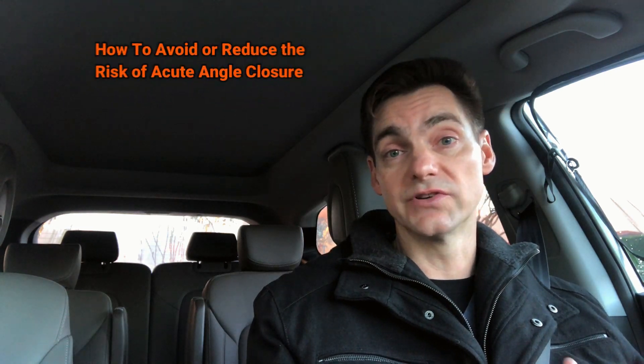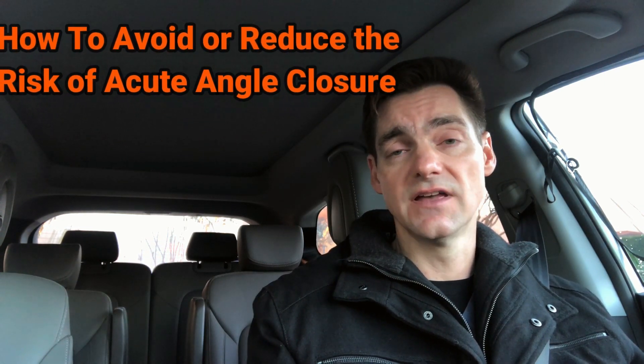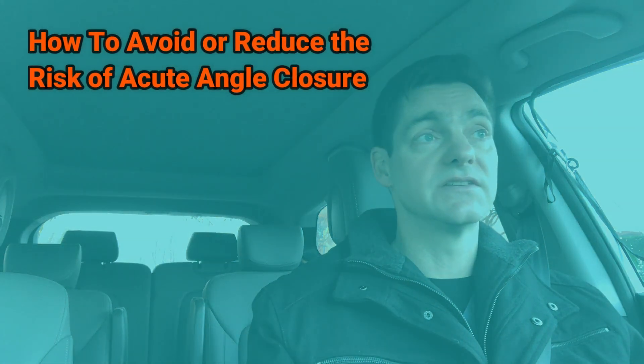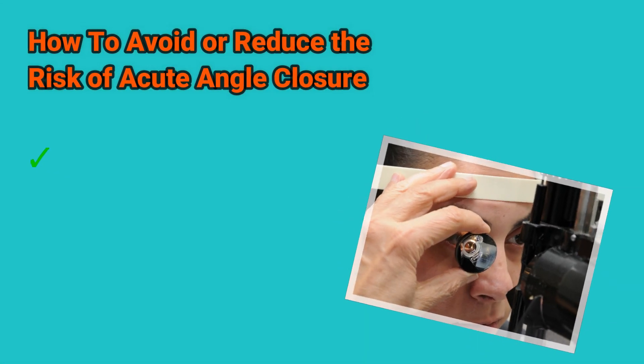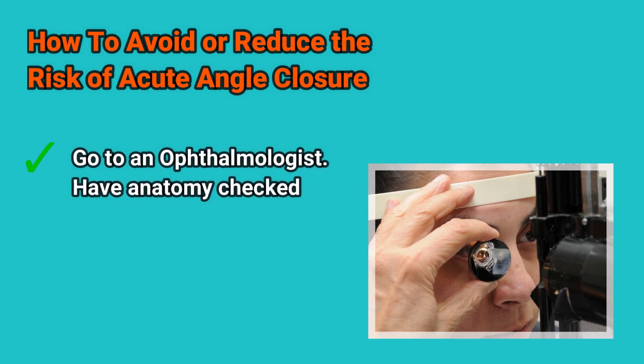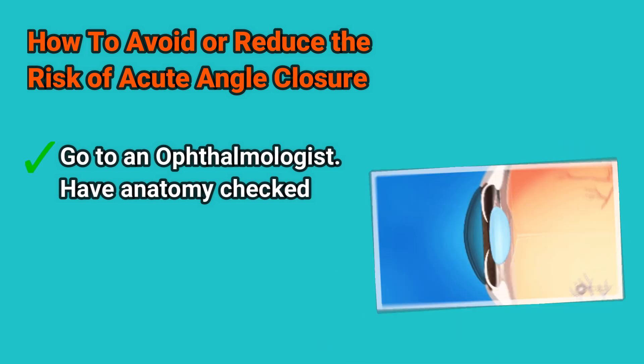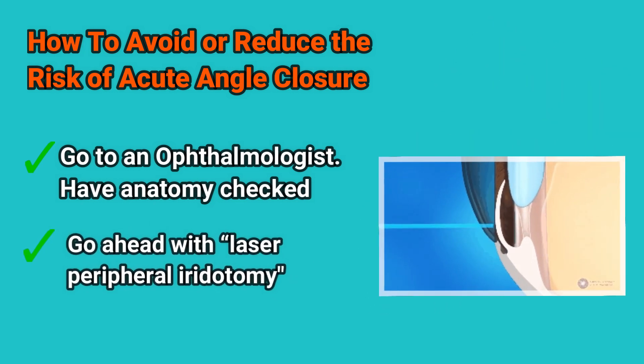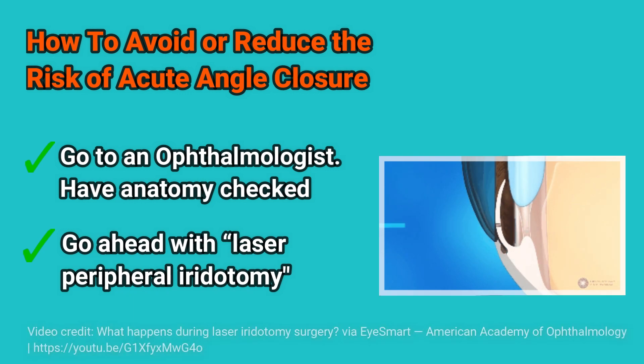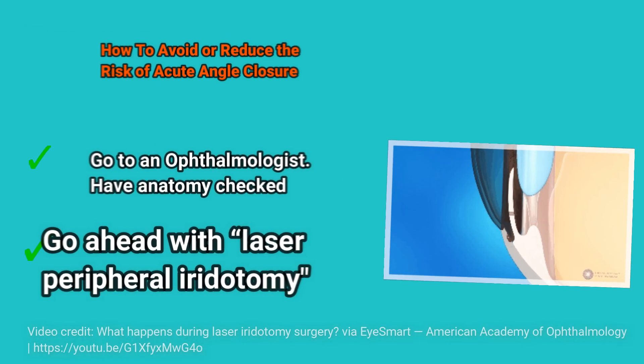One thing an individual can do to avoid or reduce the risk of acute angle closure is to have the anatomy checked out in an ophthalmologist's office. If the angle is already narrow, go ahead with the laser procedure called laser peripheral iridotomy in order to prevent closure. It's not 100% prevention, but it does a good job of preventing it in the majority of those who have narrow angles.